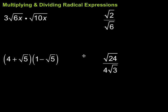In this video, we're going to take a look at multiplying and dividing radical expressions. When we're multiplying radical expressions, what we want to do is take the radicand — in other words, what's inside the square roots — and we can multiply those things together and get that product under the square root. And then from there, we can do some simplification.